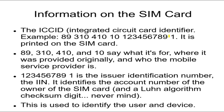Usually when you buy a cell phone, it comes with a SIM card that will identify the user. You want the SIM card — it has information about where it came from, who it belongs to, and who it is registered to. It's used to identify both the user and the device.